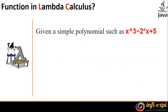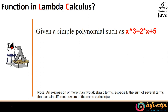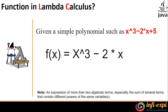Let's take one more example for a quick understanding of Lambda Calculus, with which we'll end the note on Lambda Calculus. Given a simple polynomial expression like x to the power of 3 minus 2 into x plus 5, I convert this to a functional expression: f of x equals x to the power of 3 minus 2 into x plus 5. For this expression, we need to manipulate a Lambda Calculus expression — encoding it in terms of Lambda Calculus.